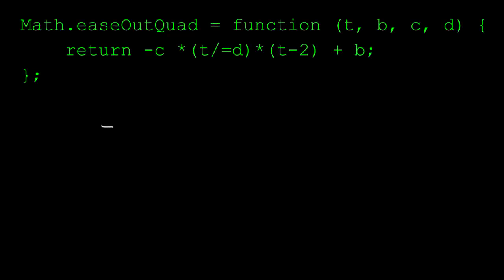Next, let's look at ease-out quad. Now here again we see t divided by d right off the bat, making t a normalized value. That leaves us with minus c times t times t minus 2 plus b. That might look a little bit odd, but if we do the multiplication, we get minus ct squared plus 2ct plus b. Well, that looks pretty quadratic.